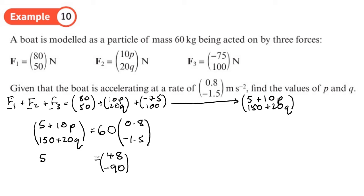And then on the bottom row 60 times by negative 1.5, we get negative 90. Okay so that's what this equals: 5 plus 10p, 150 plus 20q. Now all we need to do is we'll take the top row that will give us one equation to find p, and take the bottom row that gives us another equation which we can use to find q.